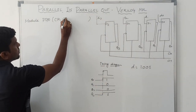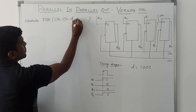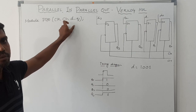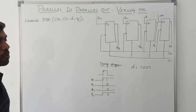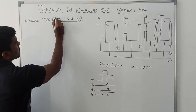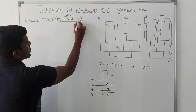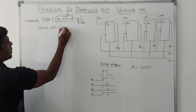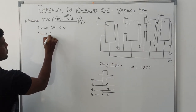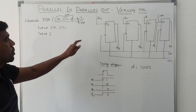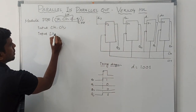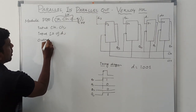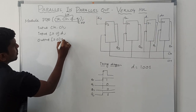These four variables are used in the block diagram. After declaring them, we declare the input and output variables. Clock and clear are inputs. D is a 4-bit input signal, represented as a vector [3:0]. Q is also declared as output [3:0].